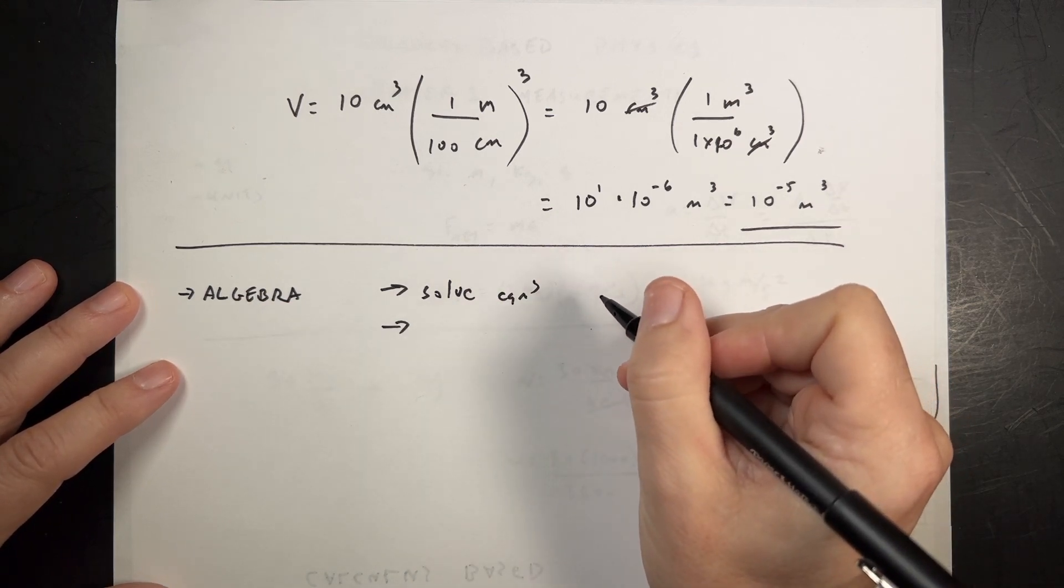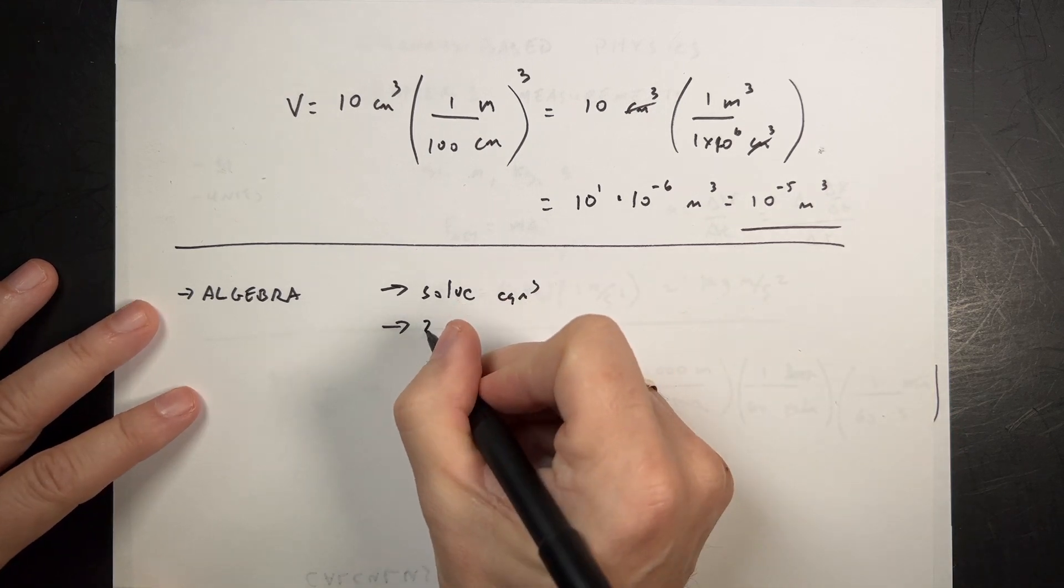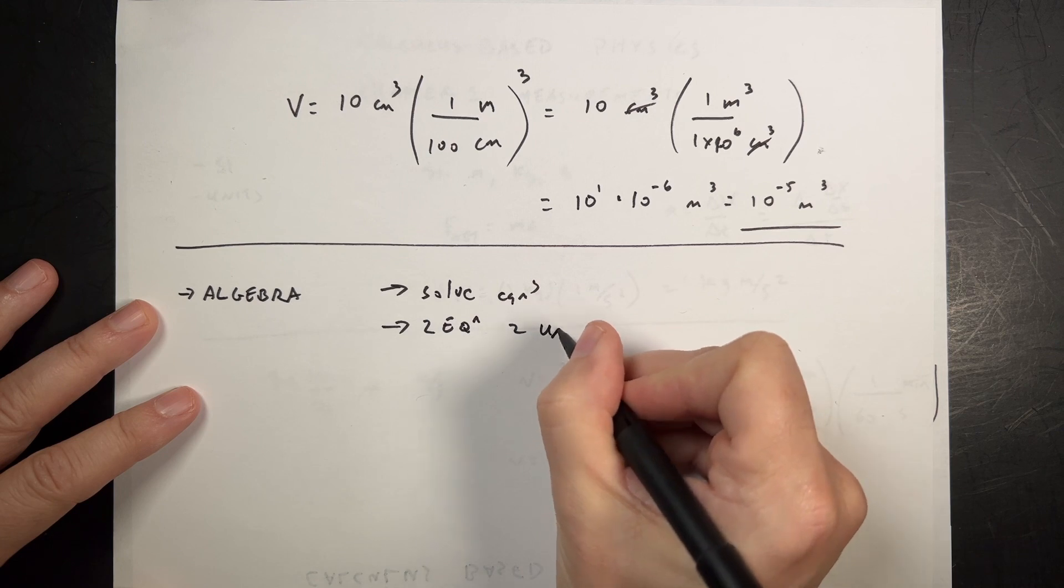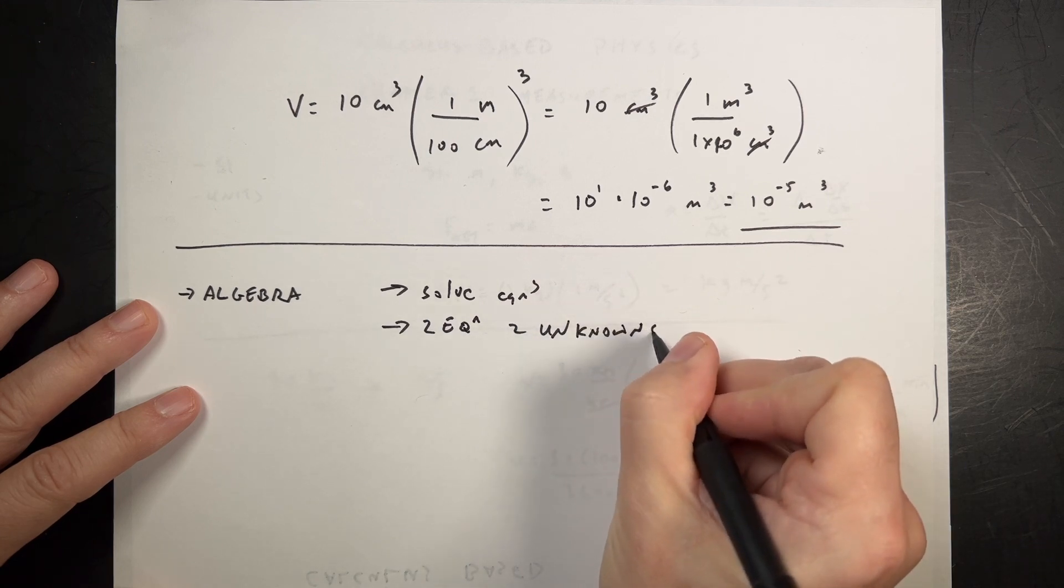solve a system of equations. So something like, I'm trying to think of a good example. Well, two equations, two unknowns. I'll just write it down. Even, probably won't do three equations, three unknowns.